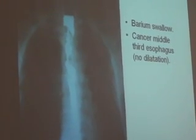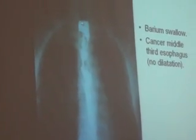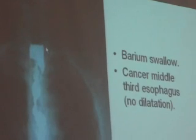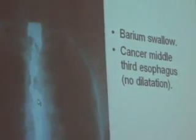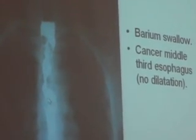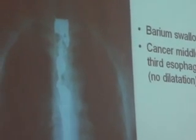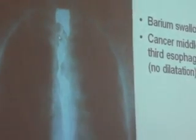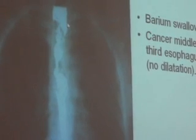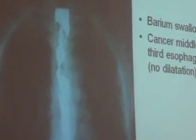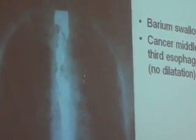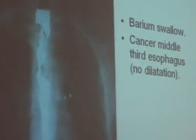Barium swallow showing the esophagus: X-ray finding number one is a fluid level. A fluid level means obstruction — if you find a fluid level in the esophagus, it equals obstruction with fluid and barium level. There is shouldering and an irregular stricture at the middle of the esophagus. This is the upper third, this is the middle third, and this is the lower third — cancer of the middle third esophagus.